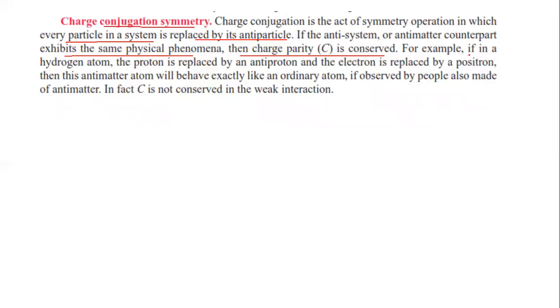For example, if in a hydrogen atom the proton is replaced by an antiproton and the electron is replaced by a positron, this antimatter atom will behave exactly like an ordinary atom if observed by people also made of antimatter. However, charge conjugation C is not conserved in weak interactions.